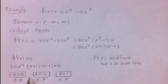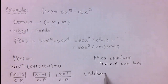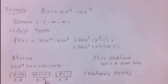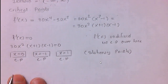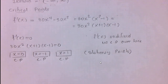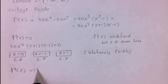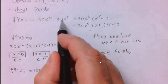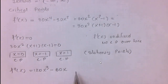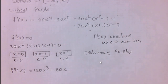Since the first derivative is zero at each stationary point and the function has first and second derivatives, we can use the second derivative test. We find the second derivative: differentiating 30x⁴ − 30x² gives 120x³ − 60x. Now we evaluate the second derivative at each stationary point.